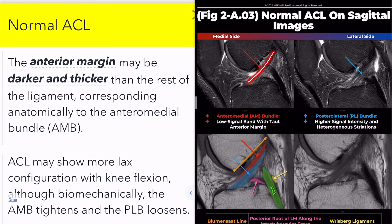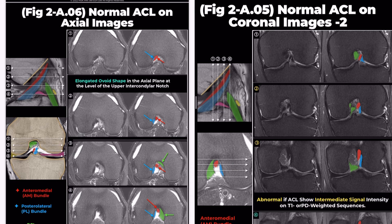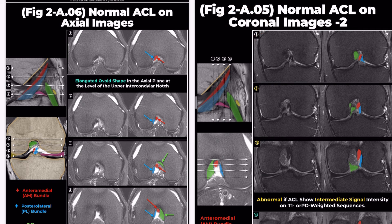The anterior margin of the ACL may appear darker and thicker than the rest, corresponding to the anteromedial bundle, while the posterior portion is the posterolateral bundle. These two bundles cannot be well delineated from each other on a single sagittal view. Axial or coronal MRI scans are more useful than sagittal images for accurately identifying and locating partial tears of these bundles.